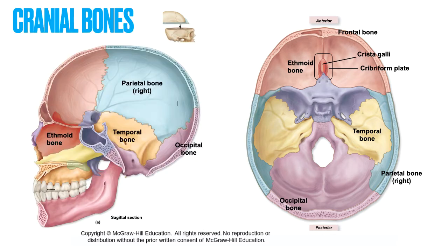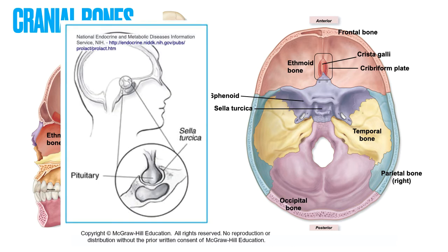The last cranial bone is shown in purple and is near the ethmoid bone — the sphenoid bone. This bone resembles a butterfly or a bat, and different views show different amounts of it. The middle of the sphenoid bone is the sella turcica, and this is where the pituitary gland rests. You can see the pituitary gland sitting in this rounded area in the image.